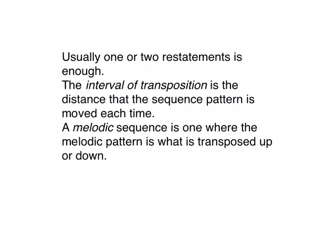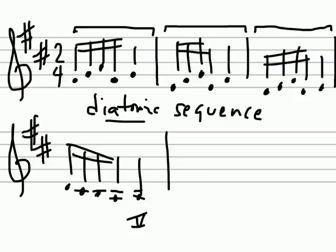When we have a sequence, usually one or two restatements — or in other words, three hearings of the pattern — is enough. There are sometimes sequences that are longer than that, but it could get tedious if you do much more. The interval of transposition is the distance that the entire sequence pattern is moved each time. Going back to this pattern, the interval of transposition is down a step — so that interval will have a direction, up or down, and a number, in this case down a second.